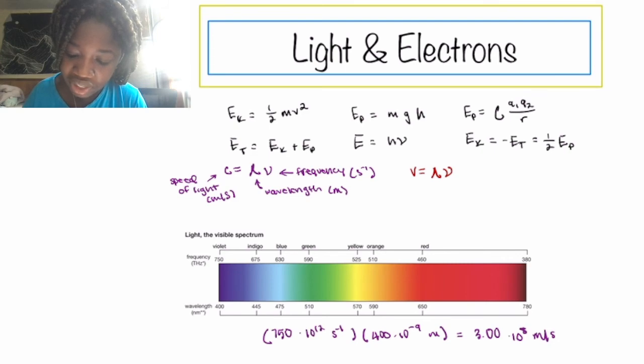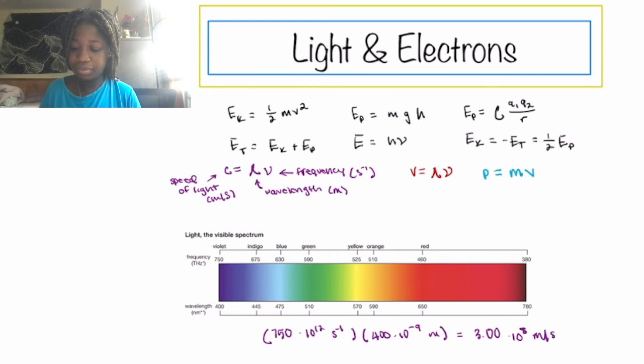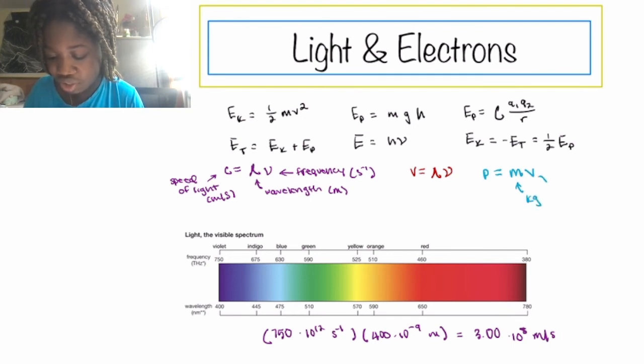which is that the momentum equals mass times the velocity. Now, mass has units of normally kilograms. This has units, velocity has units of meters per second.